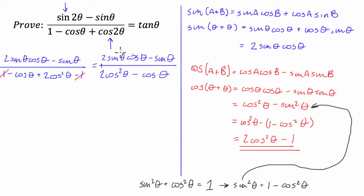Now, once you get it to look like this, you can see that in the top we've got common factors and in the bottom we also have common factors. So what we're going to do next is we're going to factorize both the top and the bottom.